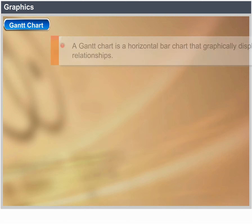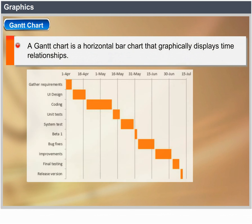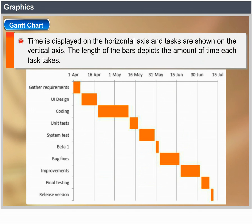Gantt Chart. A Gantt Chart is a horizontal bar chart that graphically displays time relationships. Time is displayed on the horizontal axis and tasks are shown on the vertical axis. The length of the bars depicts the amount of time each task takes.